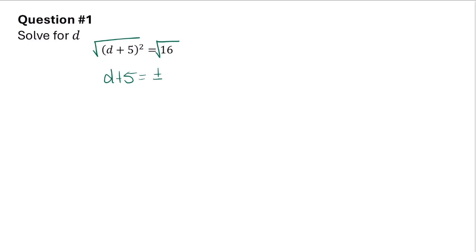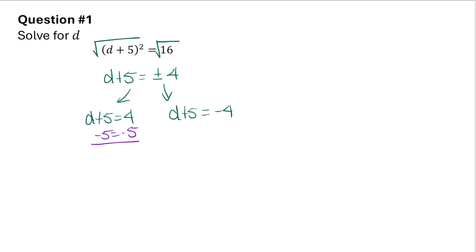We can now separate this into two equations: d plus 5 equals 4 and d plus 5 equals negative 4. Now let's go ahead and solve for d by subtracting 5 from both sides. When we subtract 5 from both sides we get d equals negative 1. Over here when we subtract 5 from both sides we get d equals negative 9.